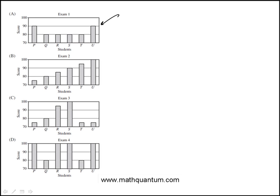We have to identify the graph in which the scores show the least standard deviation, meaning they deviate the least from the mean. So we're looking for a graph where the data sets are closest to the mean.